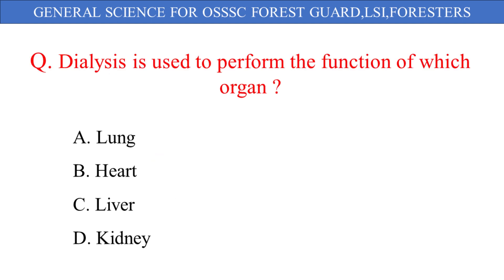Dialysis is used to perform the function of which organ? The given options are: A. Lung, B. Heart, C. Liver, D. Kidney. And the correct answer is option D: Kidney.